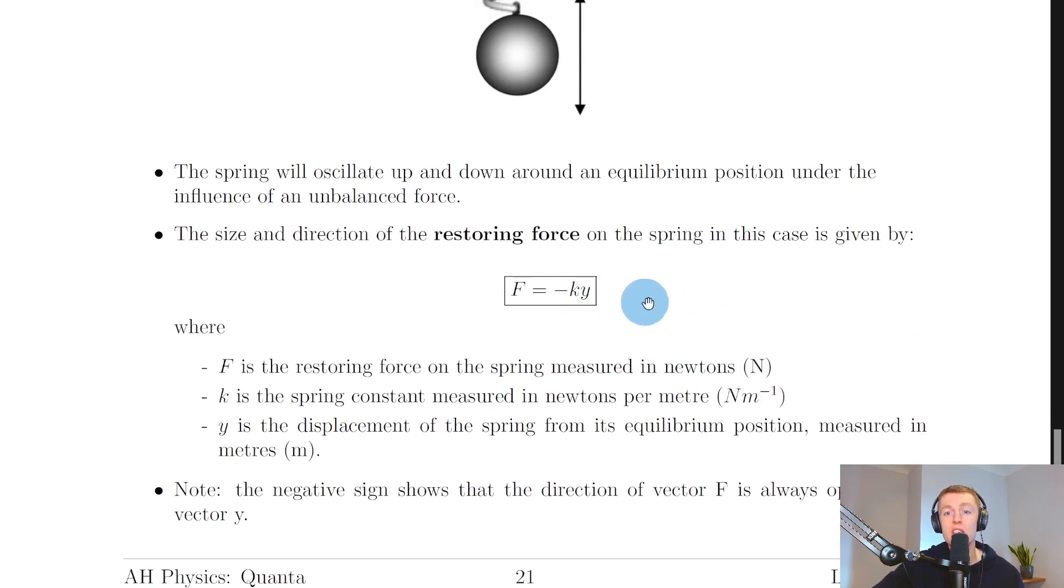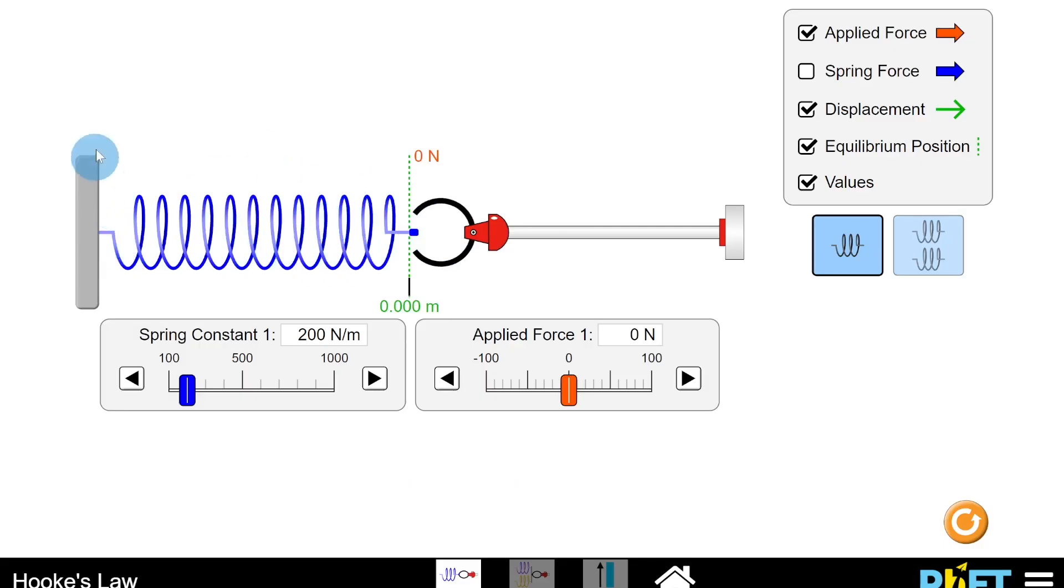I'm just going to show you a quick animation to help you understand this. So here we have a spring which is fixed at one end and then attached to this lever here which can pull it and compress it, and right now I'm using a spring with a spring constant k of 200 newtons per meter. To investigate Hooke's Law, what you could do is change the applied force to the spring and then note down the corresponding displacement value of the spring.